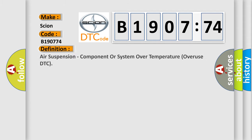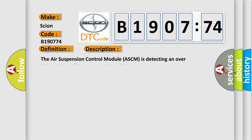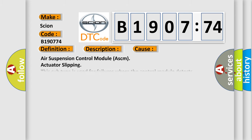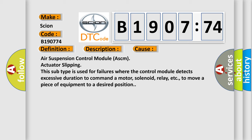The basic definition is Air Suspension Component or System Over Temperature Overuse DTC. The Air Suspension Control Module (ASCM) is detecting an over-temperature of a component or system. This diagnostic error occurs most often in these cases: Air Suspension Control Module ASCM Actuator Slipping — this subtype is used for failures where the control module detects excessive duration to command a motor, solenoid, relay, etc., to move a piece of equipment to a desired position.